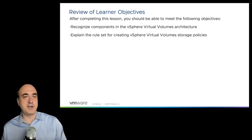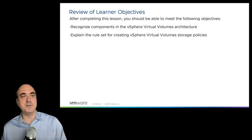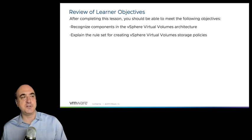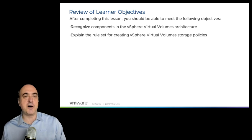In any case, this was a quick view of understanding some of the basics of the virtual volume architecture. We took a look at the components that make up the architecture, and you should also see how the rule set for creating a virtual volume storage policy is actually implemented. That ends this lesson — we'll take a break and then come back to take a look at storage IO control. Stay tuned, we'll see you in a few minutes.